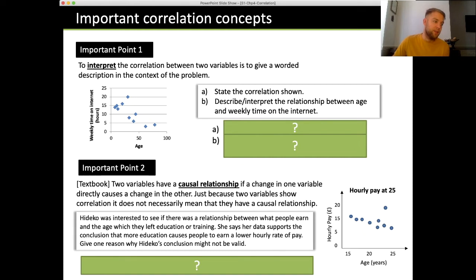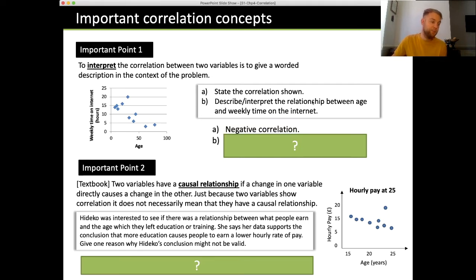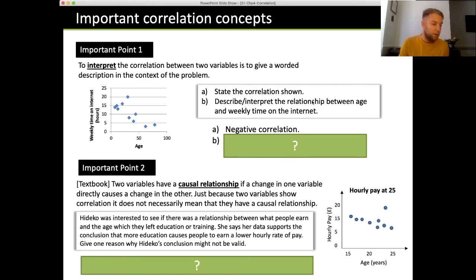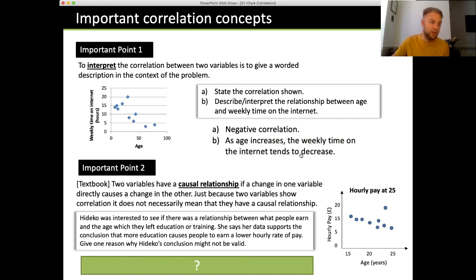Looking at the first example: as one thing increases the other decreases, so this is a negative correlation. To describe and interpret this data: the older somebody is, the less time they seem to spend on the internet. So as age increases, the weekly time on the internet decreases.